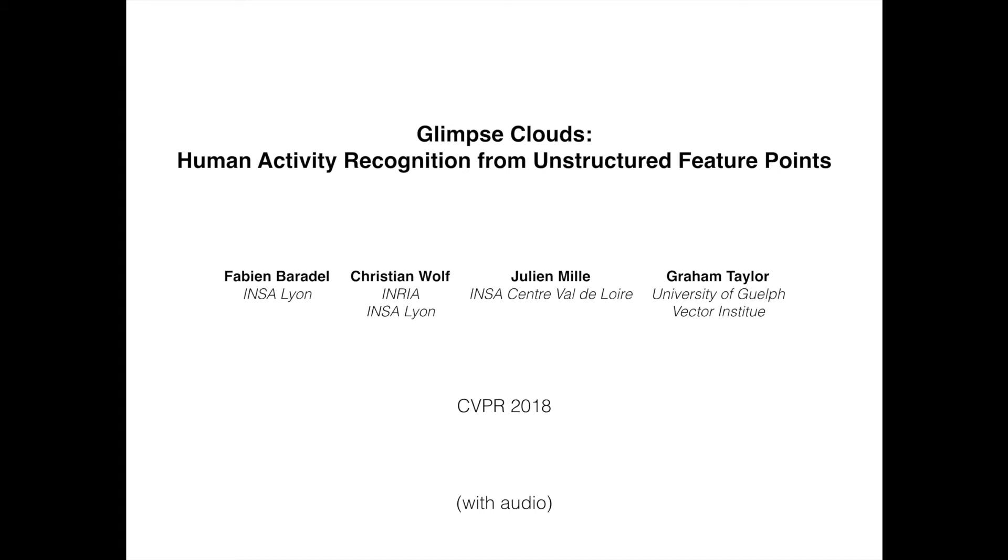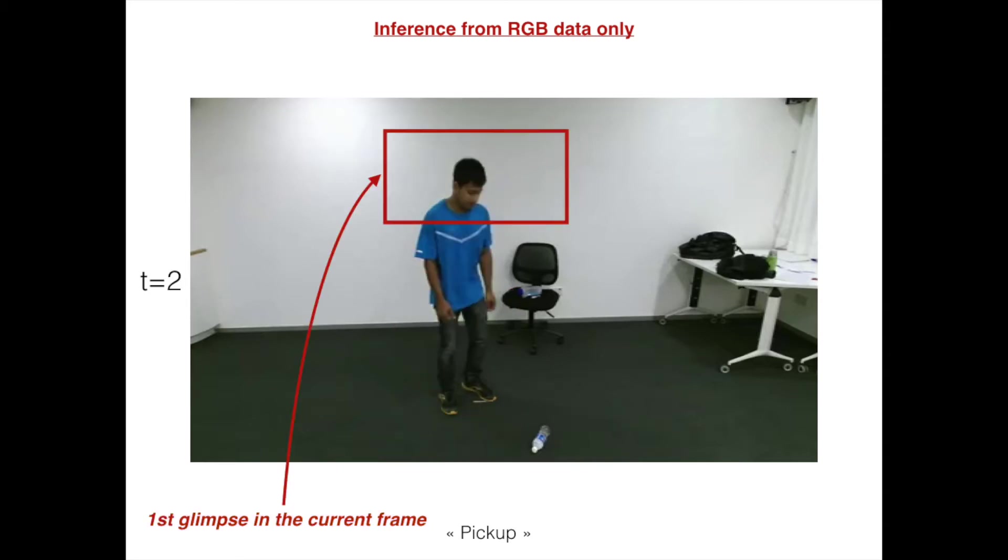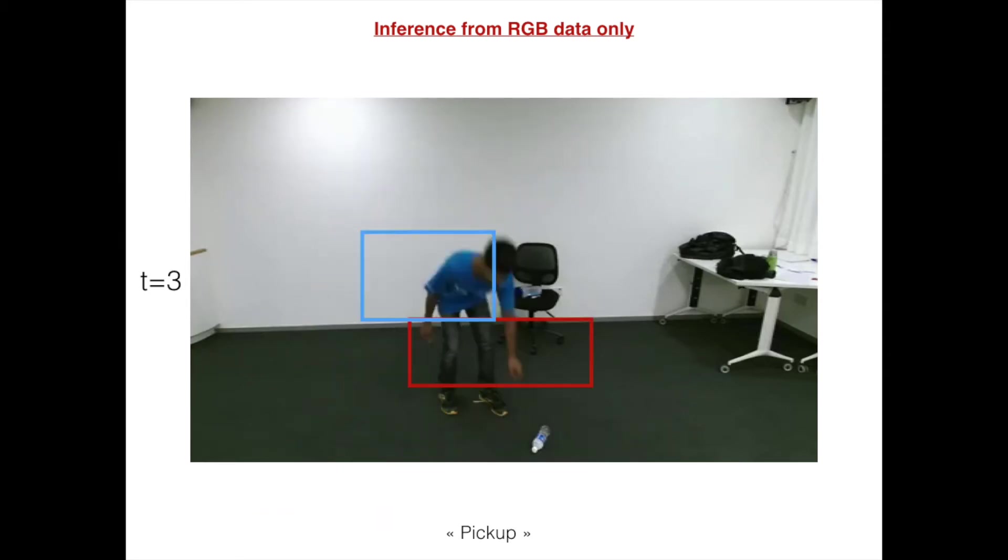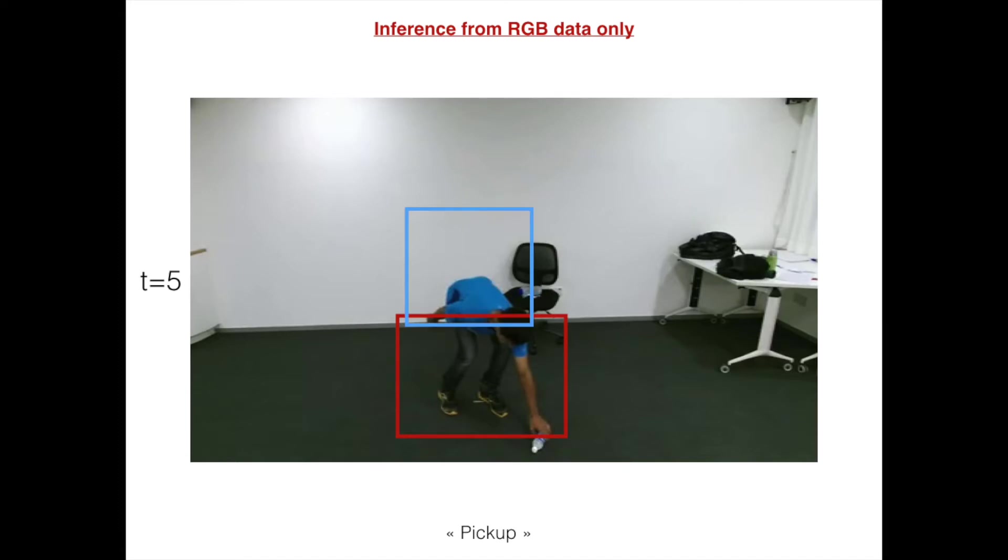We present a new method for human action recognition. Our proposed approach does not require articulated pose at test time as input is RGB only. The model learns to extract glimpses around people and on relevant objects. Pose can be used as a regularizer during training.